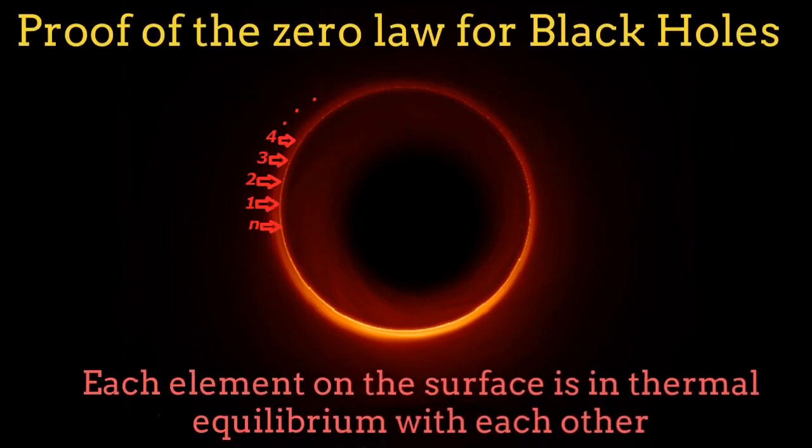The zero law of black hole thermodynamics is very easy to prove. If we divide the event horizon into small elements from one to n, the elements in direct contact with each other must be in thermal equilibrium. But this would mean that all the elements from one to n have the same temperature because they are contiguous elements. Then the black hole event horizon has the same temperature along its surface.